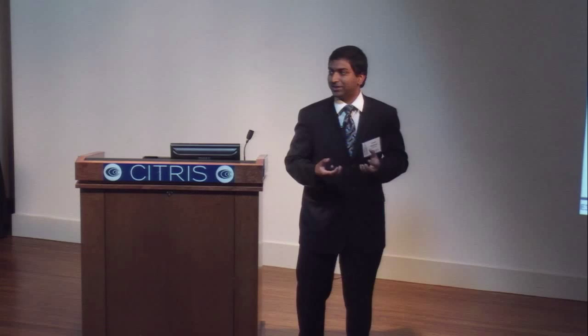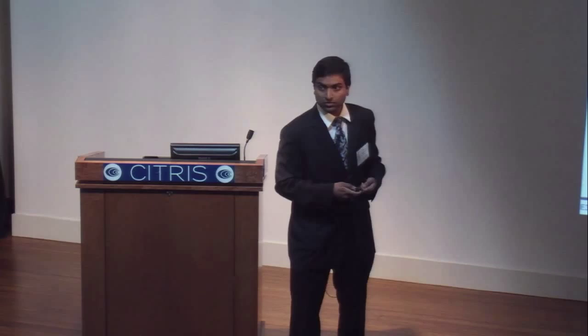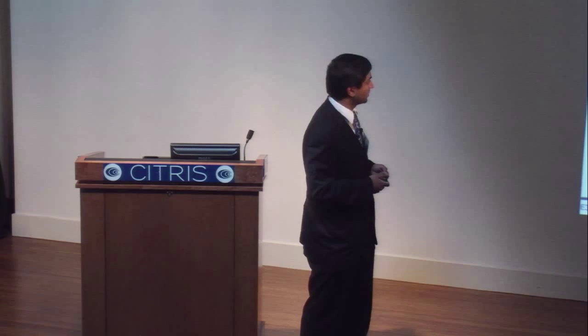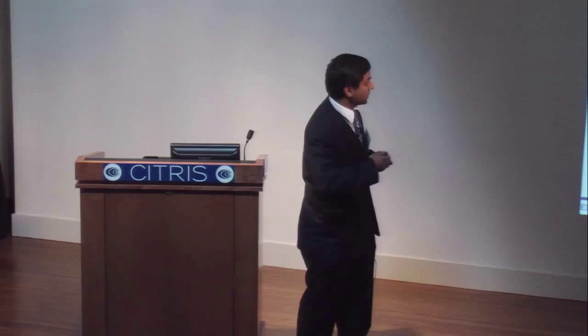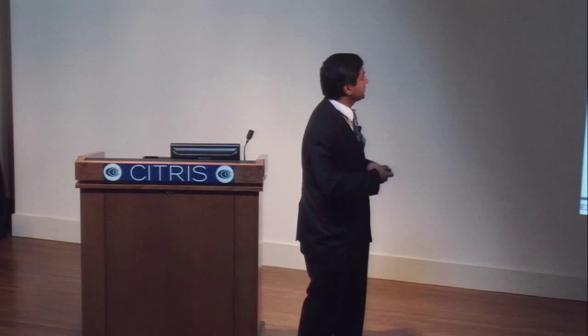Final question: You said to increase current, decrease the dimension, but when you decrease to a perfect 2D system, you don't have out-of-plane momentum — how do you increase the energy and momentum for electrons to tunnel out of the quantum well? Response: There are two parts to current flow. One is current flowing into the quantum well, which is set by standard MOSFET electrostatics and remains pretty high. The other part is the low tunneling probability in the perpendicular direction, and quantum confinement helps make up for that through increased wave function overlap.